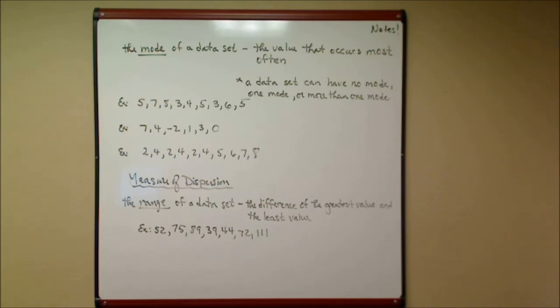The third measure of central tendency, the first one was the mean, the second one was the median, the third one is the mode of a data set. The mode of the data set is the value that occurs most often. Now there are some exceptions here. There's not always just a single value for the mode. A data set can have no mode, it might have just one mode, or it might have more than one mode.